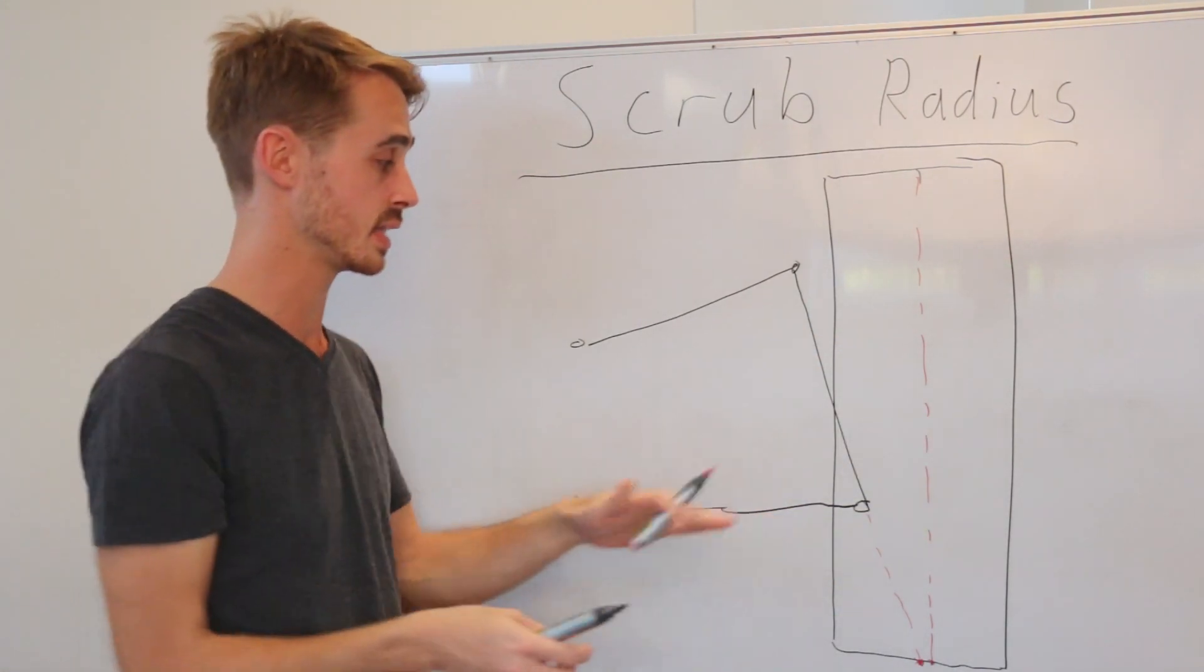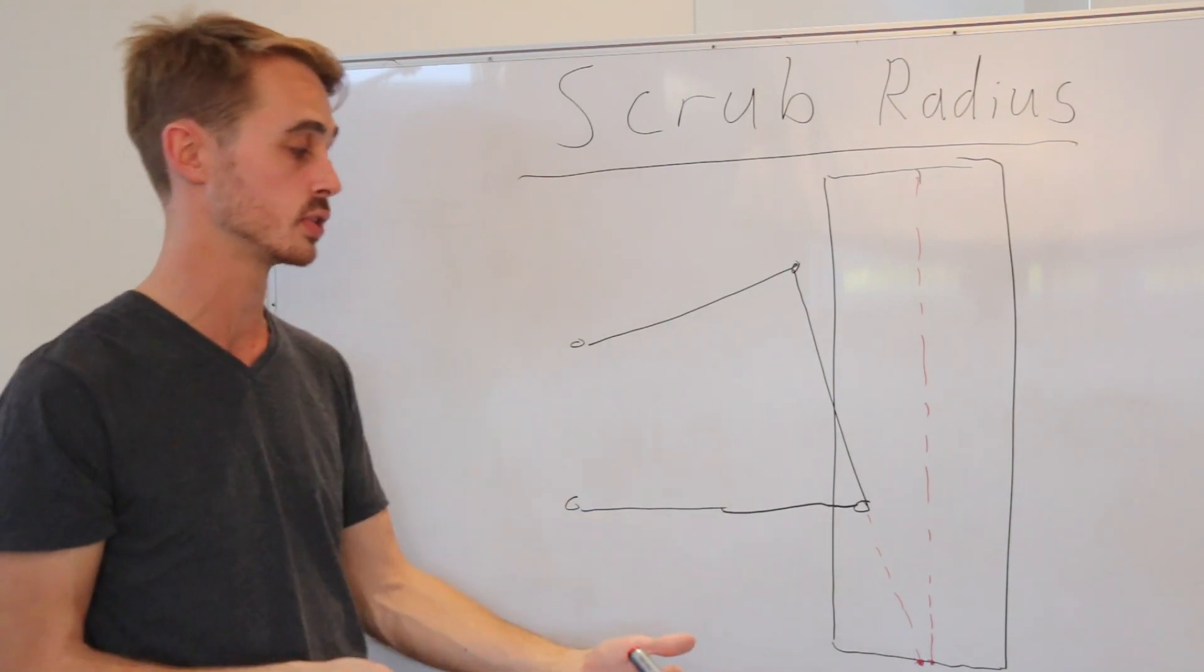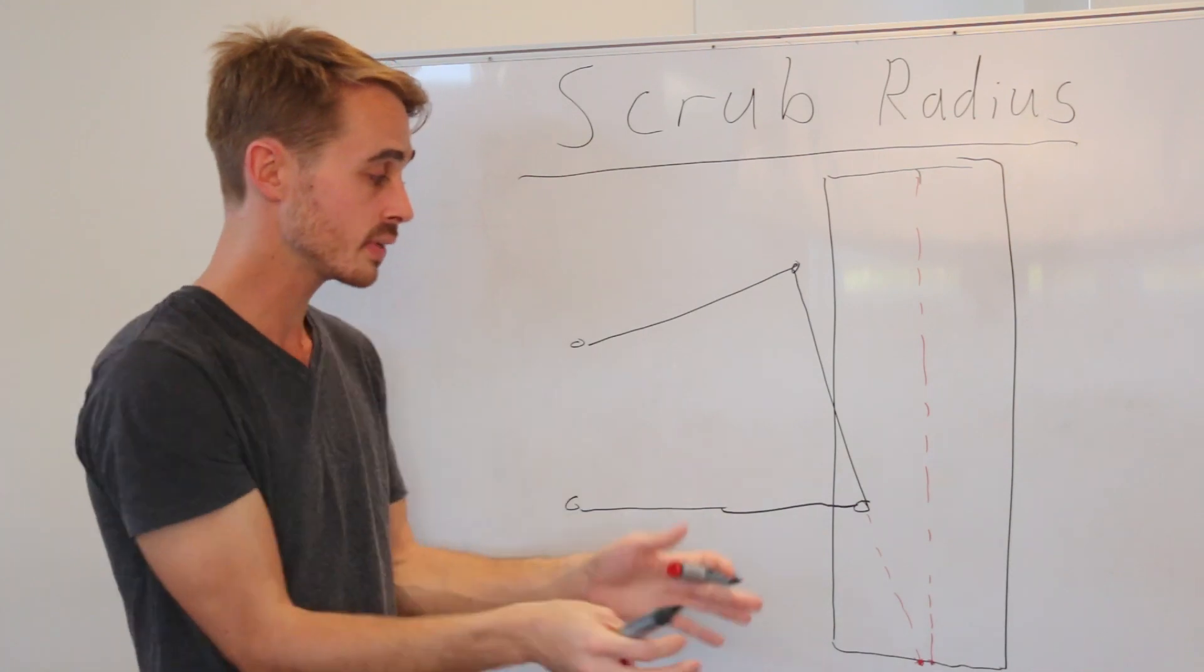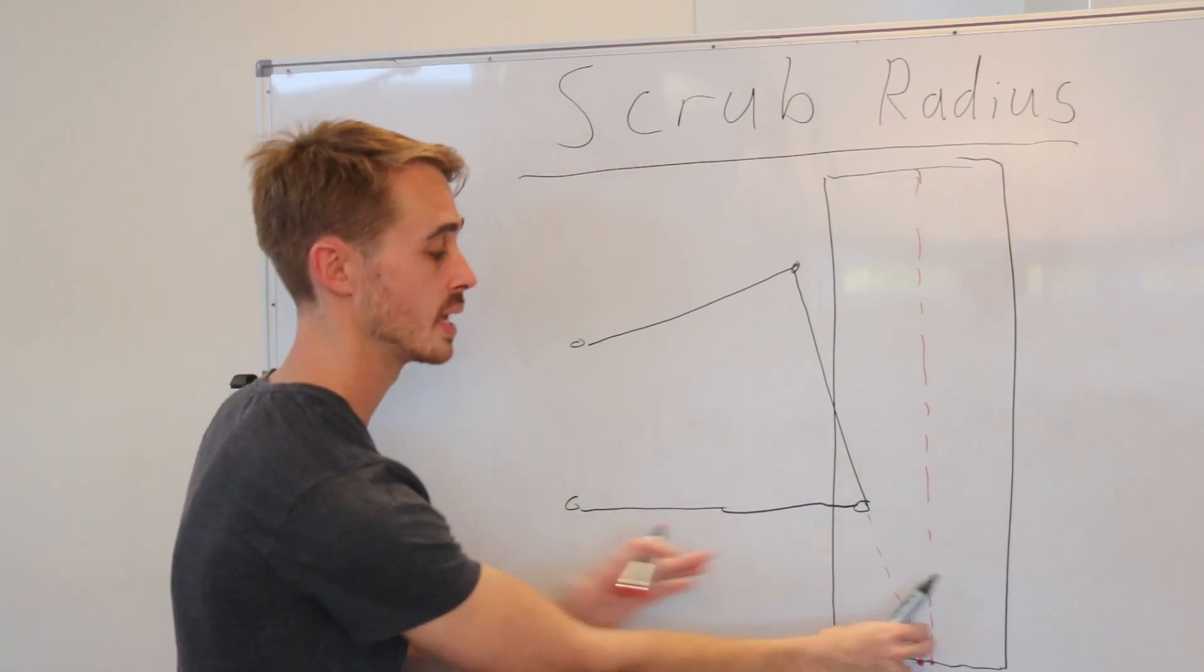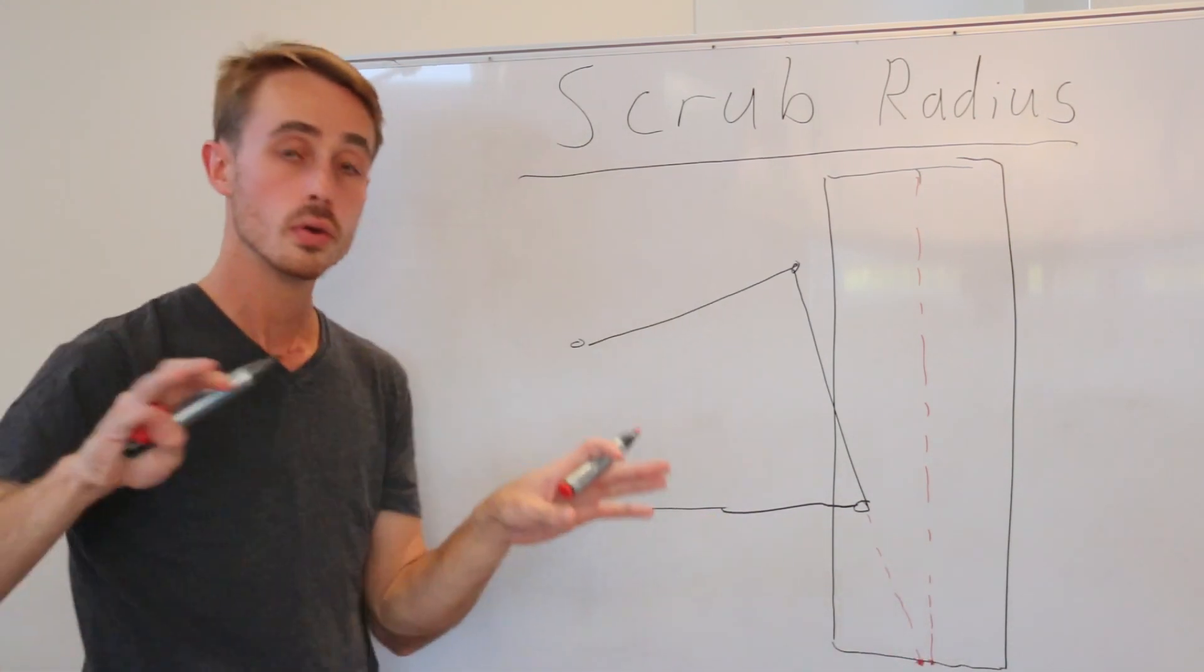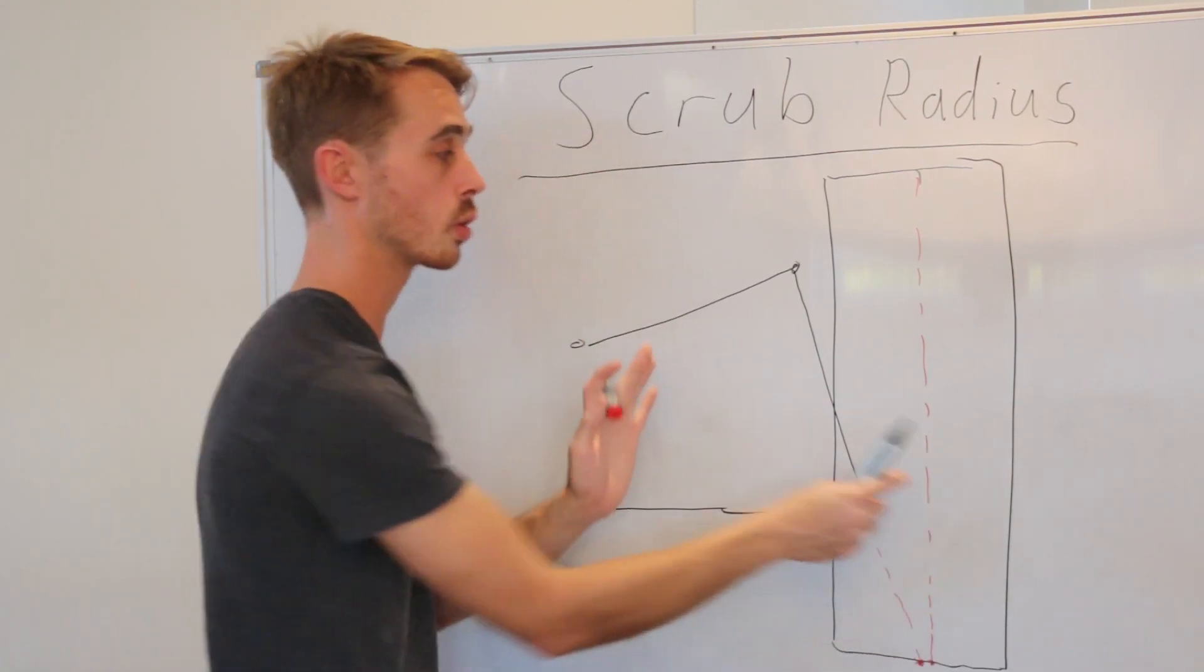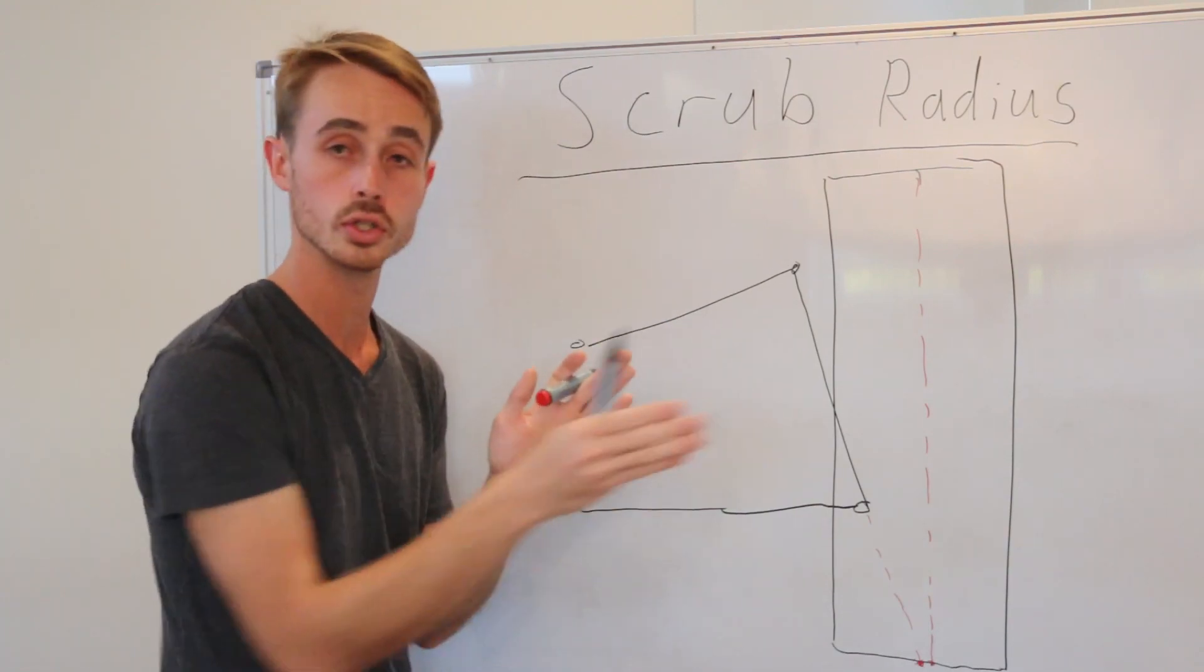If you imagine this tyre takes an impact from the front in something like, say, an off-road scenario, or even just a speed bump, you can see that it's going to force that tyre back. Or even under braking, the force will be outside of here. So the more you increase this distance, the more you increase the torque of whatever force is applied longitudinally on the tyre.